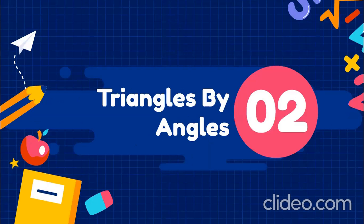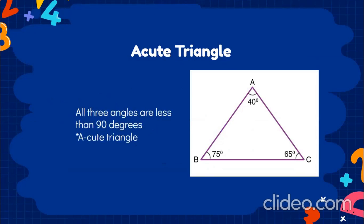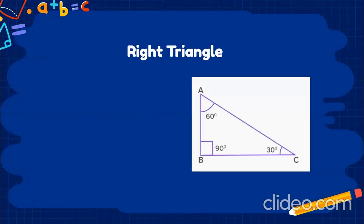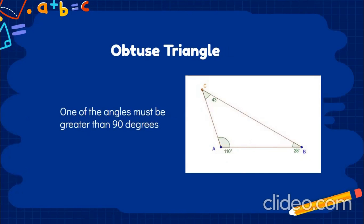Now we're going to learn about triangles classified by their angles. Here we have an acute triangle — all three angles are less than 90 degrees. You can think of a 'cute' triangle because every angle is cute and therefore small. Here we have a right triangle, which means one of its angles is a right angle. Last we have the obtuse triangle, meaning one of its angles must be greater than 90 degrees.